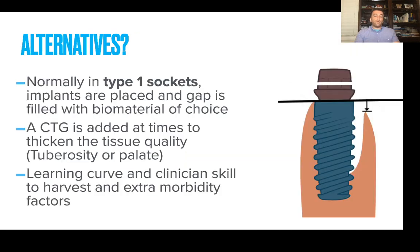What do we normally do? In type 1 sockets — sockets with intact buccal and lingual plates — implants are placed and we fill the gap with a biomaterial of choice. Typically we also add a connective tissue graft from the tuberosity or palate to thicken the tissue or change the biotype from thin to thick. There is a learning curve to this, including extra morbidity factors that come into play.